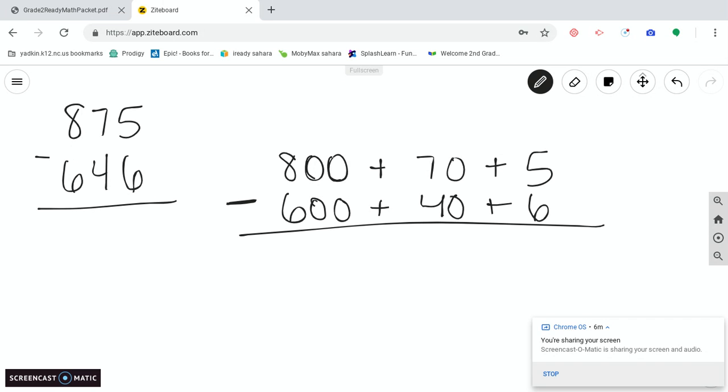875 is 800 plus 70 plus 5. And 646 is 600 plus 40 plus 6. Now here's the part we have to remember: we're subtracting, not adding. So when we're adding, it doesn't matter. We can start in the hundreds or tens or ones because we're going to put them all together. In subtraction, it matters. We have to start in our ones place. When we see these addition signs, it makes us think we're adding, right? But remember, that's just how you made your number. We're really subtracting. We're taking away.